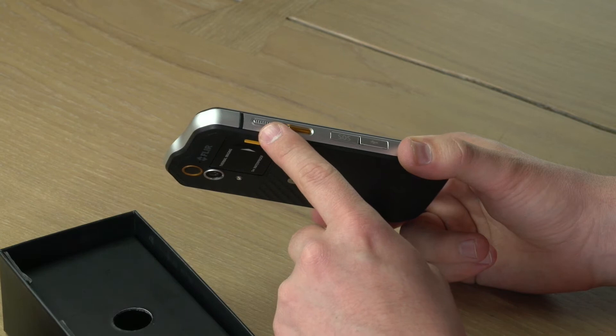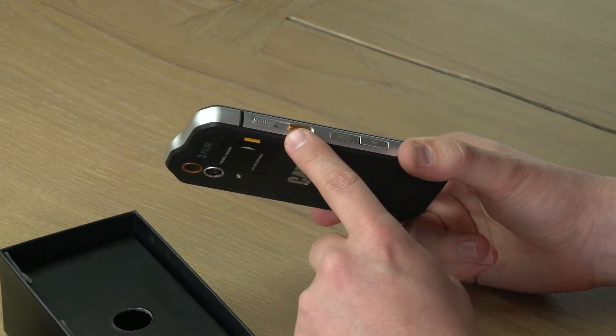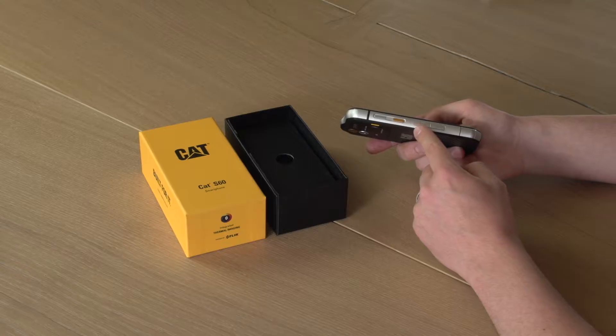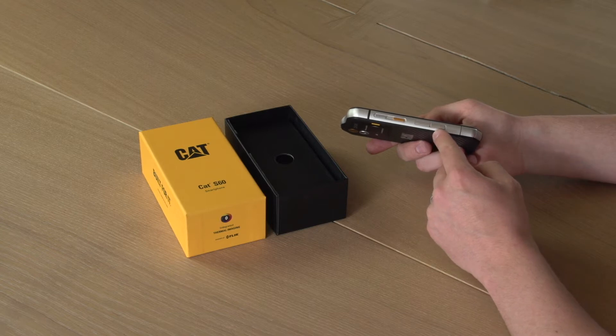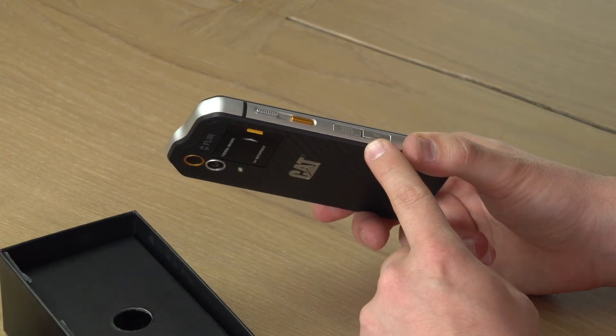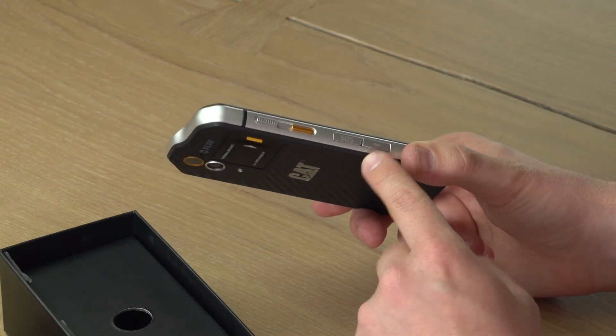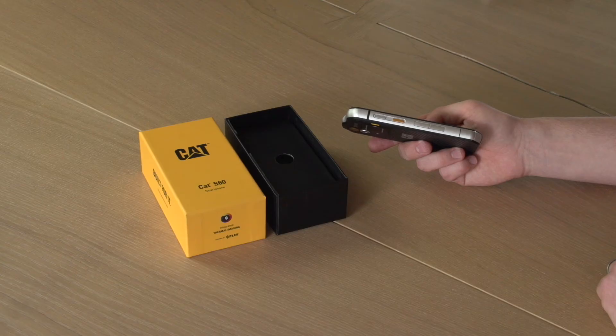On the side of the device there's the power key, a programmable key that can be set to a range of functions, an SOS button and a micro USB connection which you can use for charging the device and for connecting a USB lead to a PC or to a Mac to remove files or place files on and off the device.